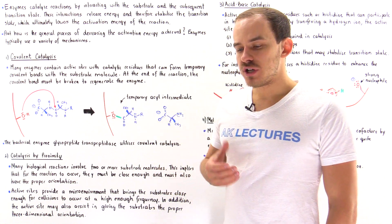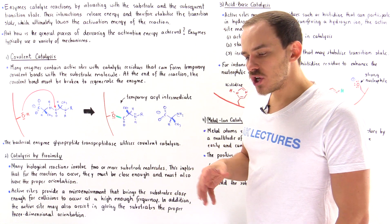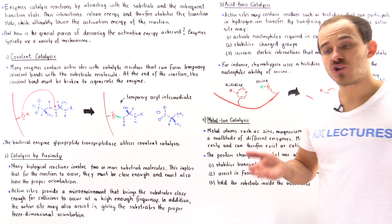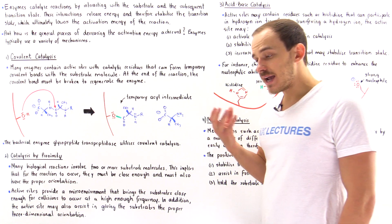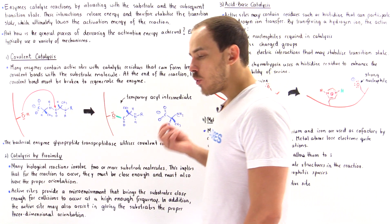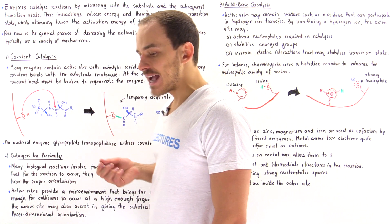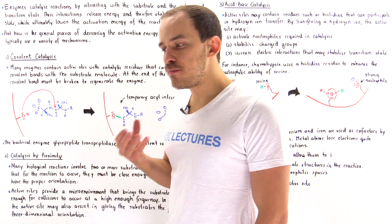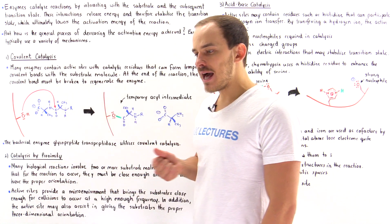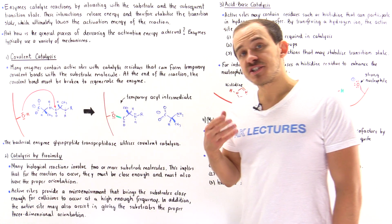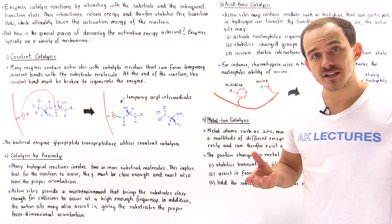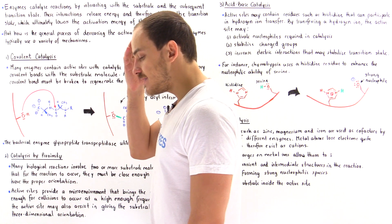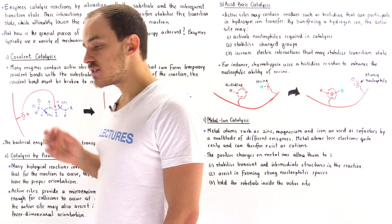Thus far in our discussion on enzymes, we kept our discussion very general. We generalized the idea of what enzymes actually do. We said that enzymes are these biological catalysts that speed up the rates of all different types of reactions that take place inside our cells.